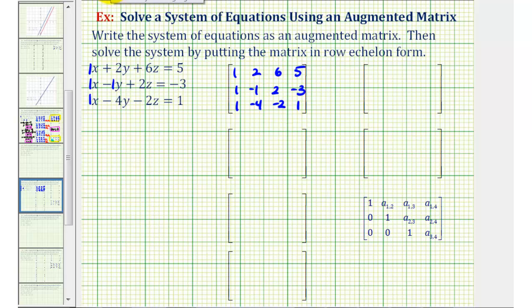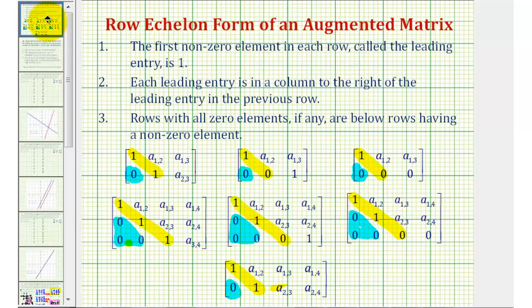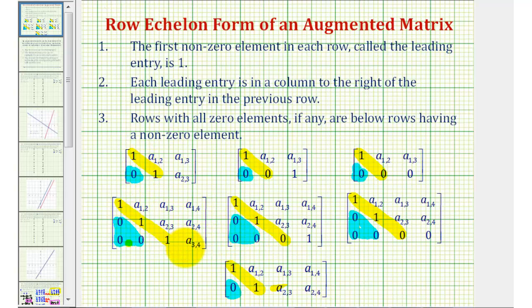Now to write this in row echelon form, we can use this form for reference, but let's review the specifics. First, the non-zero element in each row called the leading entry must be one. Number two, the leading entry or one in a column is to the right of the leading entry or one in a previous row. And finally, rows with all zero elements, if any, are below rows having a non-zero element. Here are several examples of matrices that are in row echelon form. Notice that in most cases the main diagonal only contains ones, but it is possible for the main diagonal to contain a zero if the system has either no solutions or infinite solutions.